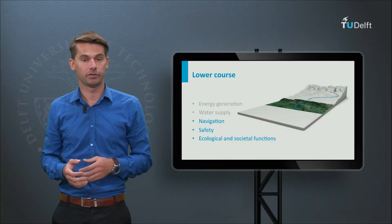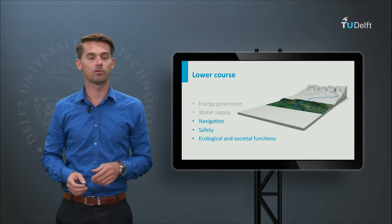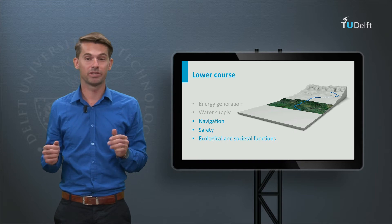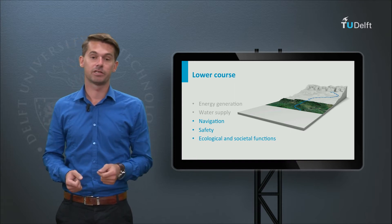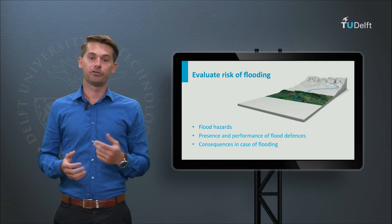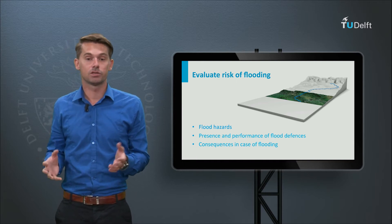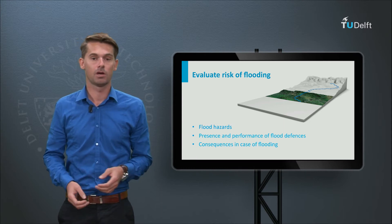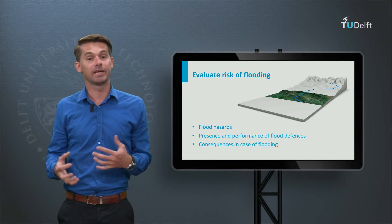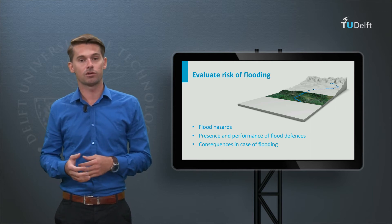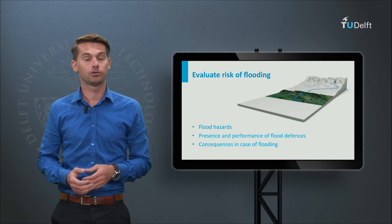Now we focus on the lower part of the river. In these regions, the surface level of the land is often relatively low compared to mean sea level and river water levels. High river discharges could potentially lead to flooding of these areas, so flood defences are built to protect them. In order to evaluate the risk of flooding, it is important to have information on flood hazards — for example, the probability of occurrence of high water levels due to river or coastal flooding — as well as the presence and performance of flood defences, and typical consequences in case of flooding. Flood risk is often defined as the combination of the probability of flooding and the consequences, and several measures can be applied to reduce this flood risk.